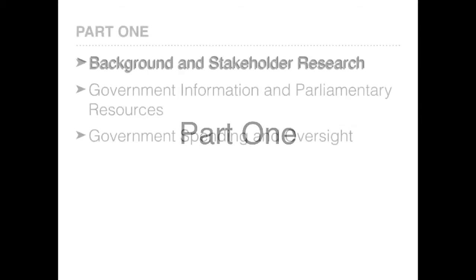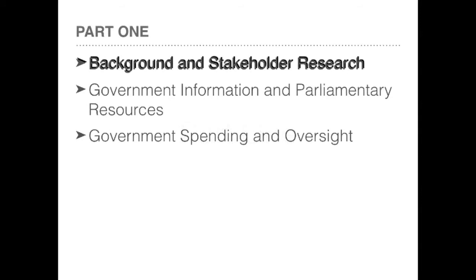In this part, we'll look at non-governmental material. Specifically, we'll look at secondary literature, news, alternative news sources, and academic literature. We'll also look at what is called gray literature — material produced by think tanks, policy groups, and advocacy groups.